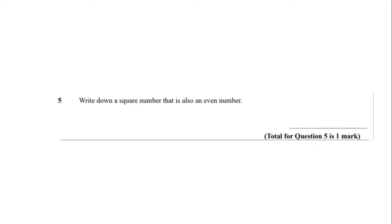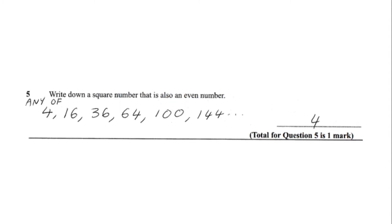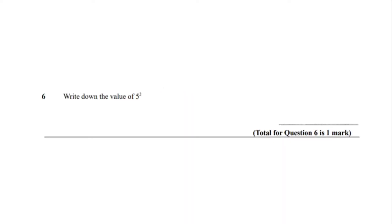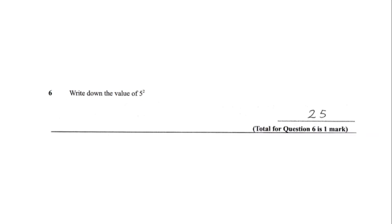Question number 5, write down a square number that is also an even number. I recommend you guys list all the square numbers and then find the first even number. You should have got 4. Question number 6, write down the value of 5 squared. You should have got 25.